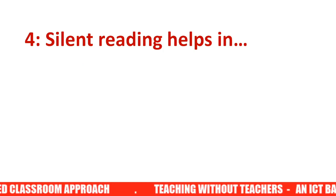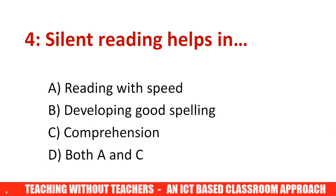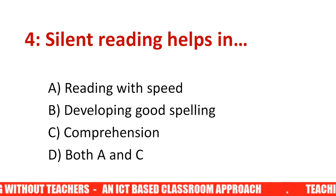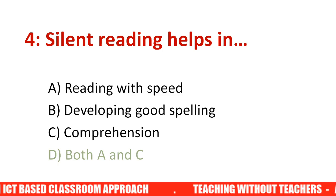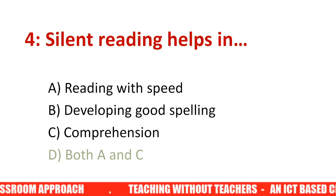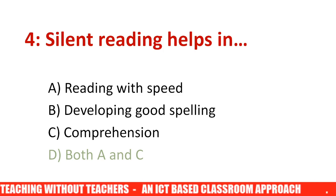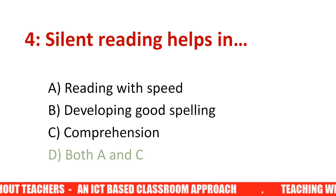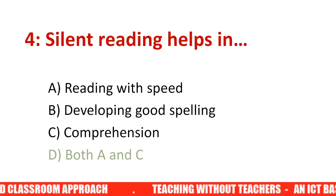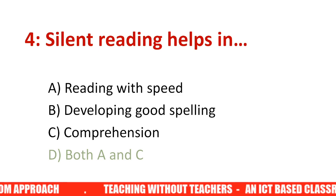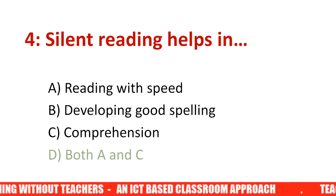Question four: Silent reading helps in dash. Options are: A) reading with speed, B) developing good spelling, C) comprehension, D) both A and C. The answer is both A and C — reading with speed and comprehension. When you read a text silently, you try to get the meaning and also read with speed. We do not focus on spelling here. Always focus on which option is most important.